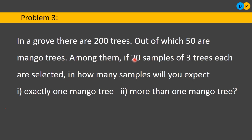We are drawing 20 samples total. In each sample there are 3 trees. Out of 200 trees, 50 are mango trees. We need to find in how many samples there will be exactly 1 mango tree, and in how many samples there will be more than 1 mango tree.